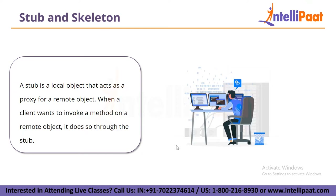The stub hides the details of communication with the remote object from the client, making the remote object appear as if it were a local object. The client does not need to know the network location of the remote object or any details of the communication protocol. Instead, the client simply calls the method on the stub, which takes care of those details. The stub is generated by the RMI compiler, which reads the interface of the remote object and generates a stub that implements the same interface. The stub is then compiled and packaged with the client application.